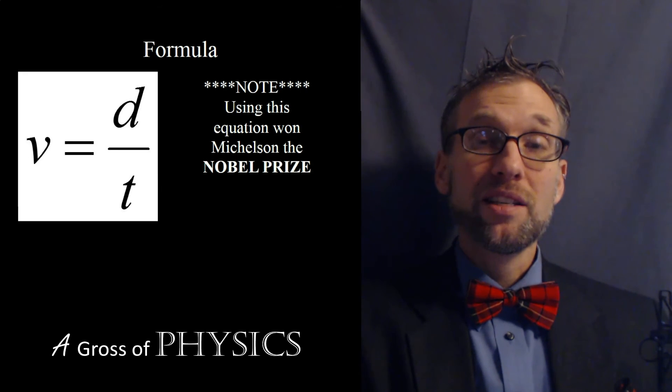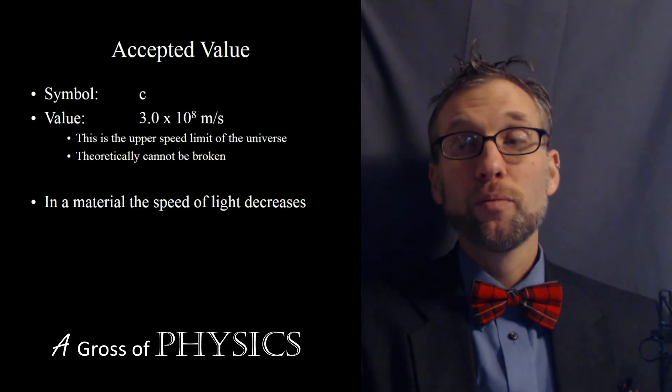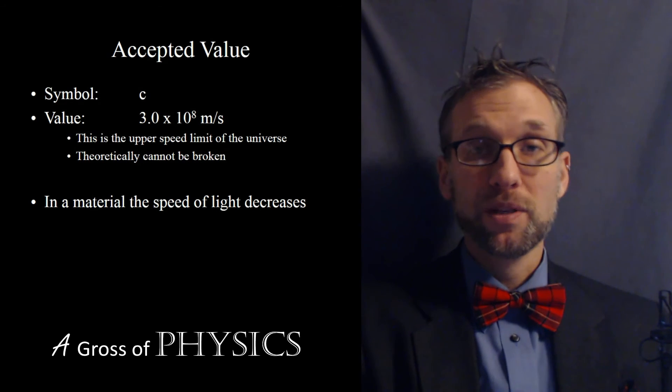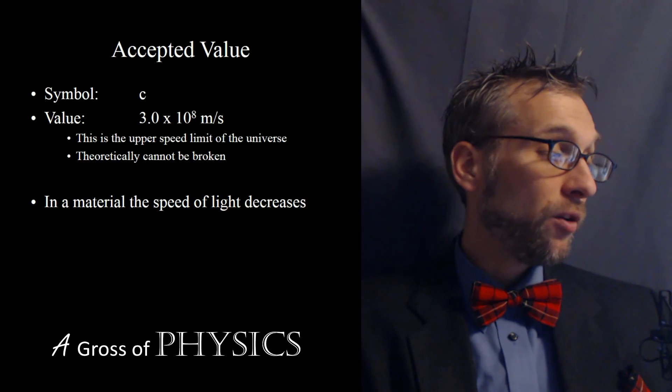We use c as the symbol for the speed of light, and it's a lowercase c. And that is going to be what we determine if we're looking for a specific value of the speed of light. That's going to be our basic value, our 3 times 10 to the 8. So c represents the speed of light in a vacuum.